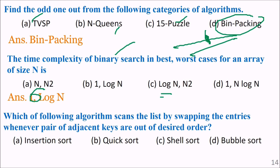Which of the following algorithms scans the list by swapping entries whenever a pair of adjacent keys are out of the desired order? The answer is bubble sort — this statement itself is the definition of bubble sort. These are a few MCQs on data structure and algorithm analysis; we will be taking more on this. Thank you so much, take care.